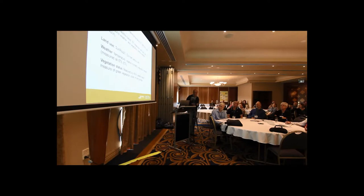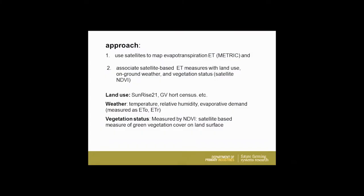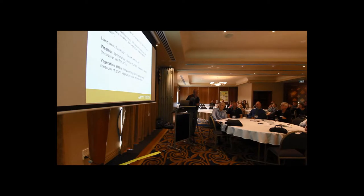The ancillary data that was used — this is where Muhammad and the Spatial Science scientists really come into their own, well beyond my appreciation of what can be done. The land use information was derived from the likes of Sunrise 21 up in the Sunraysia region, and the Goulburn-Murray Valley horticultural censuses that are conducted on a routine basis in this part of the world. We associated that land use information with the ET maps, and we needed to take account of the weather at the same time, collecting information at the time of the satellite overpass as to what the weather was on the ground.